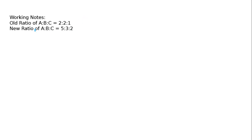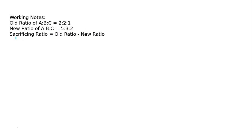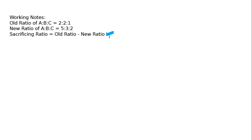Old ratio of A:B:C is 2:2:1. New ratio of A:B:C is 5:3:2. Sacrificing ratio = old ratio minus new ratio. For A: 2/5 minus 5/10 — LCM 10 — that is 4/10 minus 5/10 = minus 1/10. This is negative, so A has a gain of 1/10.